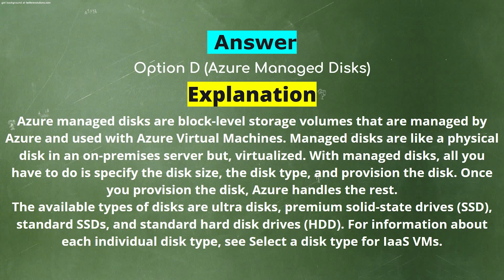The available types of disk are: Ultra Disk, Premium Solid State Drives (SSD), Standard SSDs, and Standard Hard Disk Drives (HDD). For information about each individual disk type, see 'Select a disk type for IaaS VMs.'